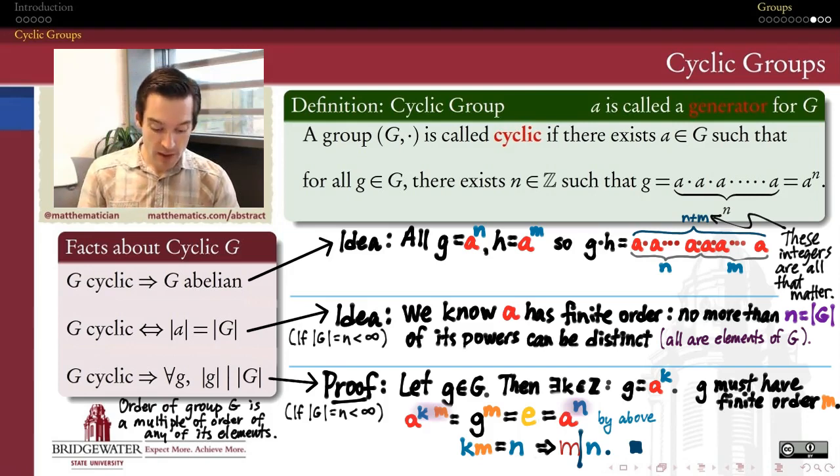In our last video, in particular, we convinced ourselves that every cyclic group, among other things, all of the elements in that group, their order is a divisor of the order of the group. And what we want to do now is take the step from talking about orders of elements to talking about subgroups of cyclic groups because they have a lot to do with one another, as it turns out.